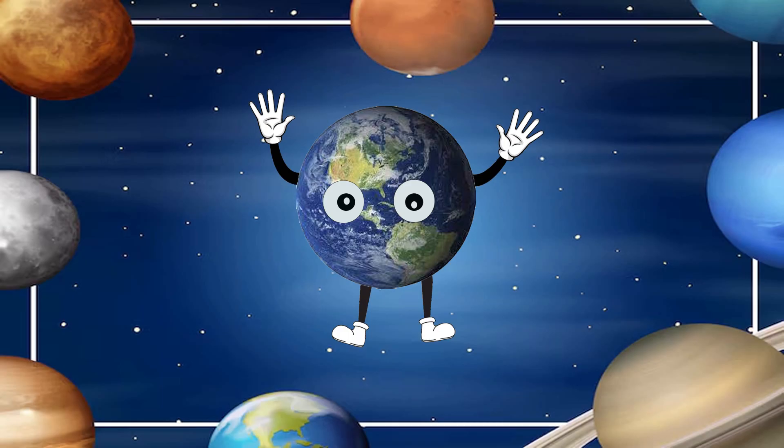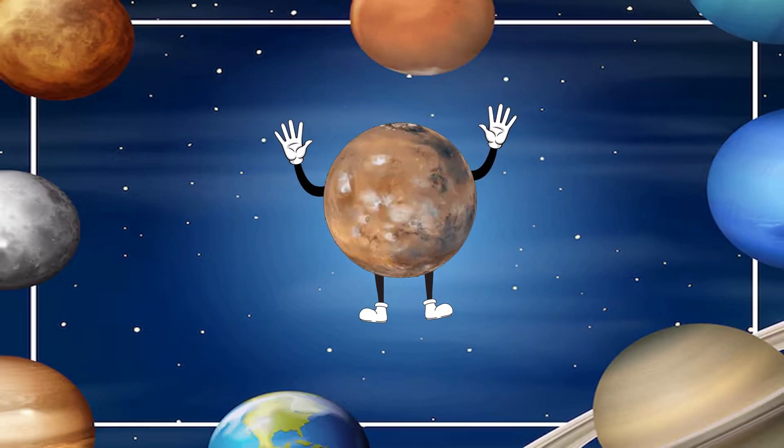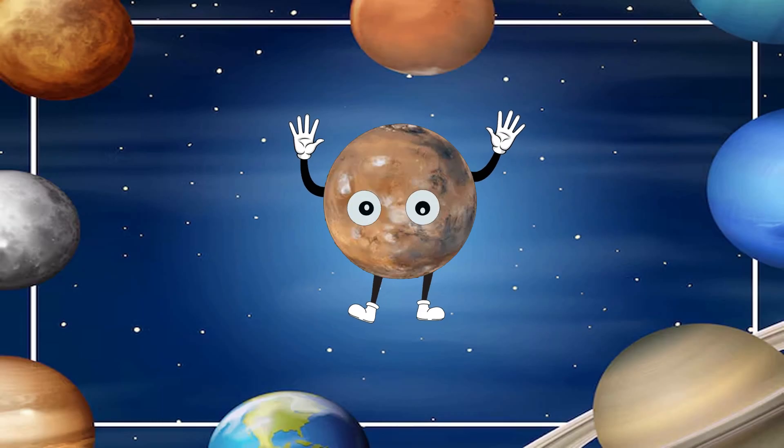My name is Mars, I am red in color, I'm the fourth planet from the sun. I have the highest mountain in our solar system, a volcano named Olympus Mons.